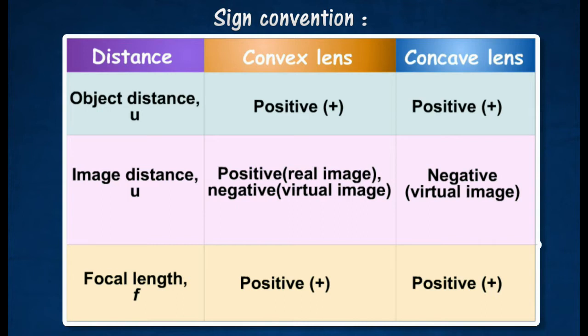For SPM level, the image distance v for a concave lens is always negative.